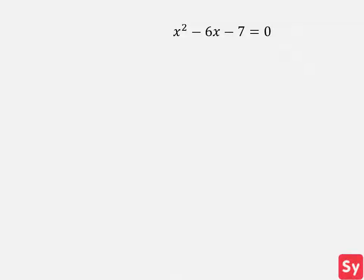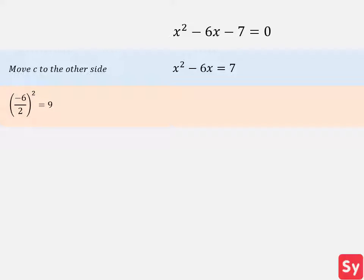First example: we have the equation x squared minus 6x minus 7 equals 0. First, we want to move c to the other side of the equation, so we add 7 to the other side. Next, we take b, divide it by 2, and square it. This equals 9, and we add it to both sides of the equation.